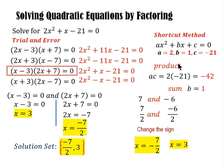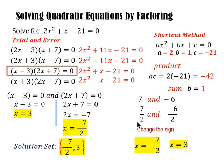To summarize the shortcut: multiply a and c to get the product — here that's negative 42. The sum is the coefficient of x, which is 1. Find factors of the product that add to the sum: 7 and negative 6. Divide each by the coefficient of x squared — if the coefficient were 4 or 5, you'd divide by that value. Then change the signs, and those are your solutions.